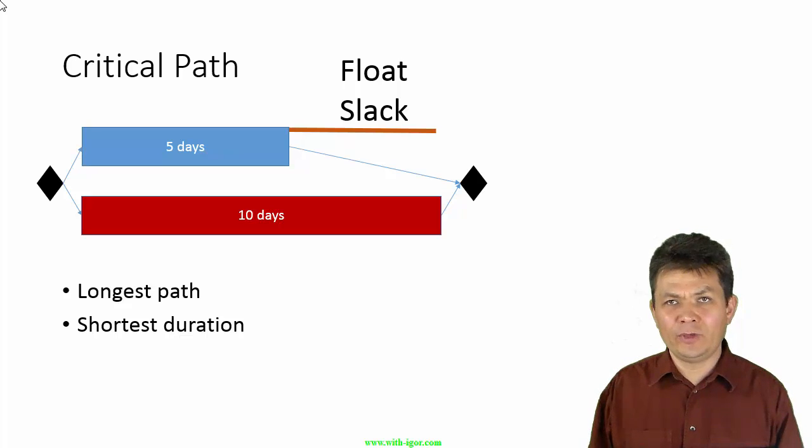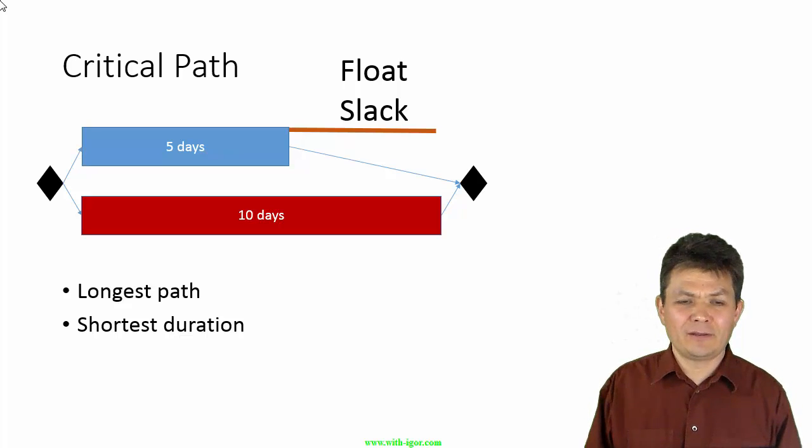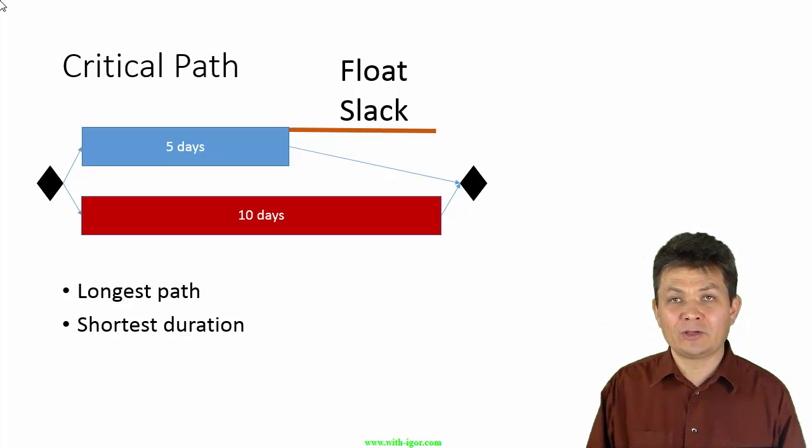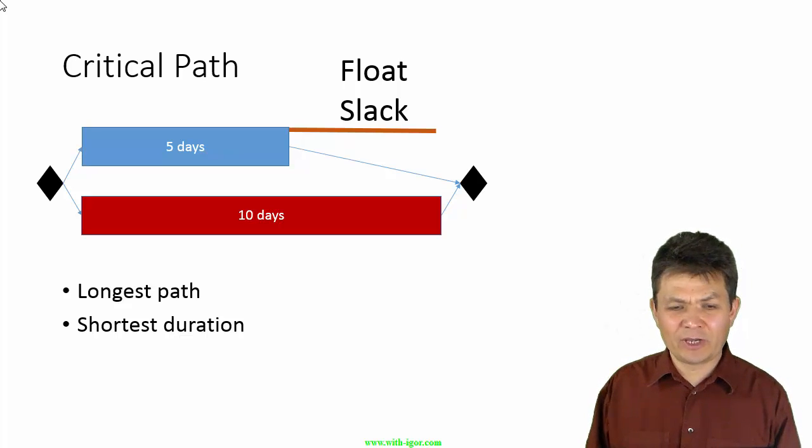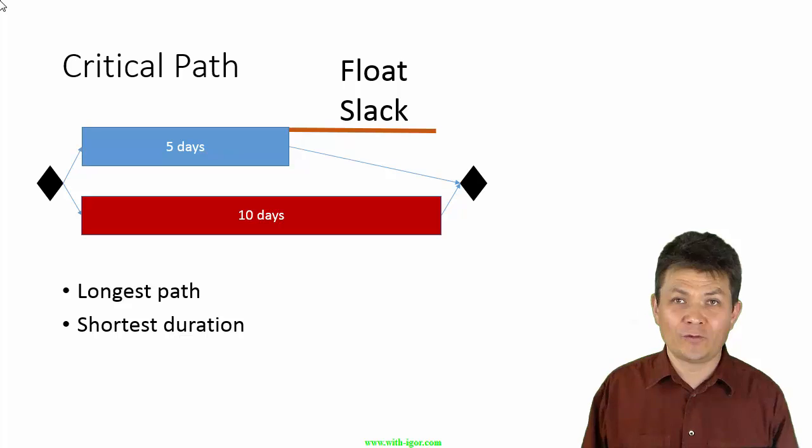However, if they go beyond that, then that task, the 5-day task becoming longer than 10 days, will become critical path. So, float or slack. I guess slack because we can slack off for 5 more days on the blue task.